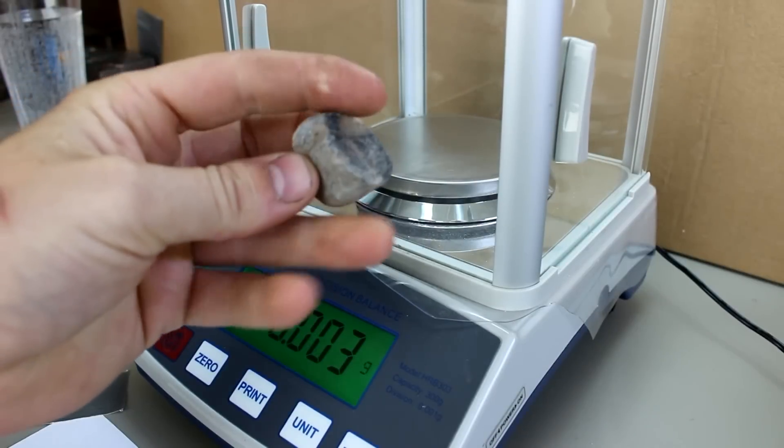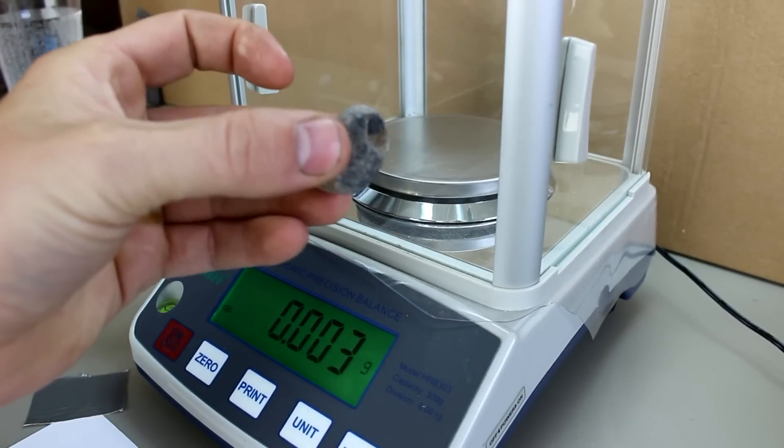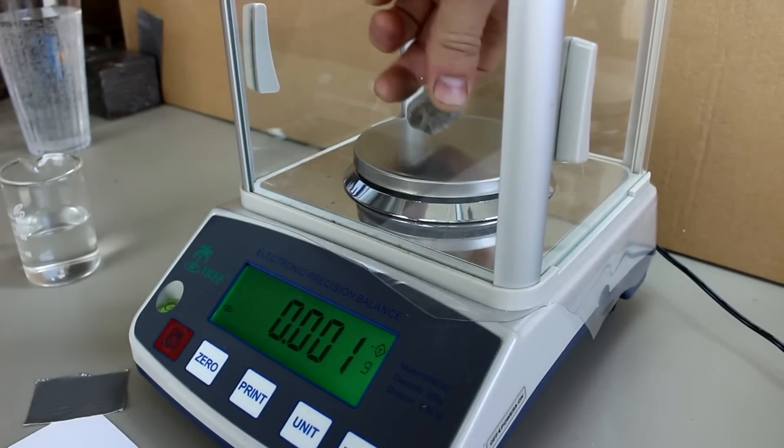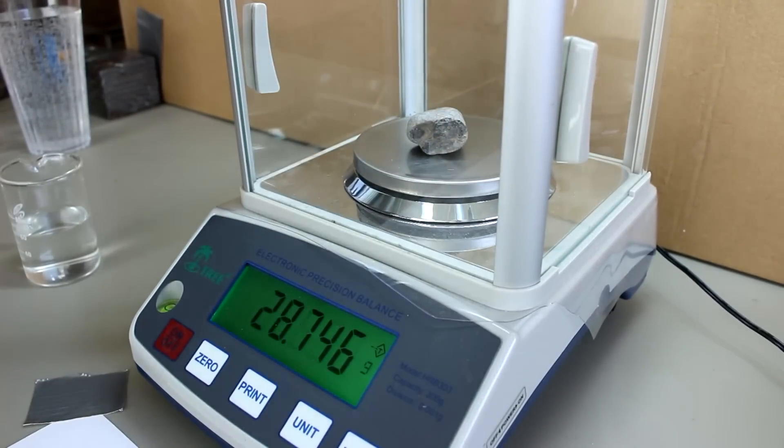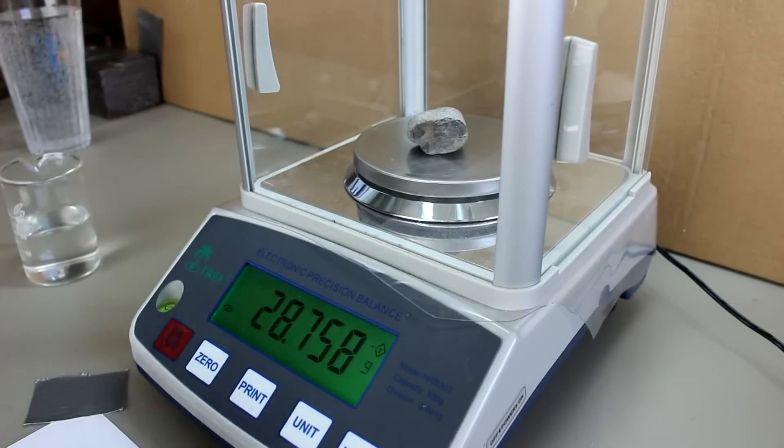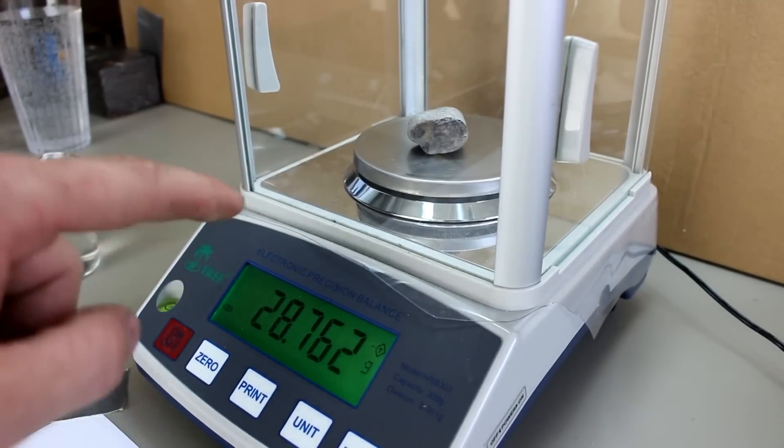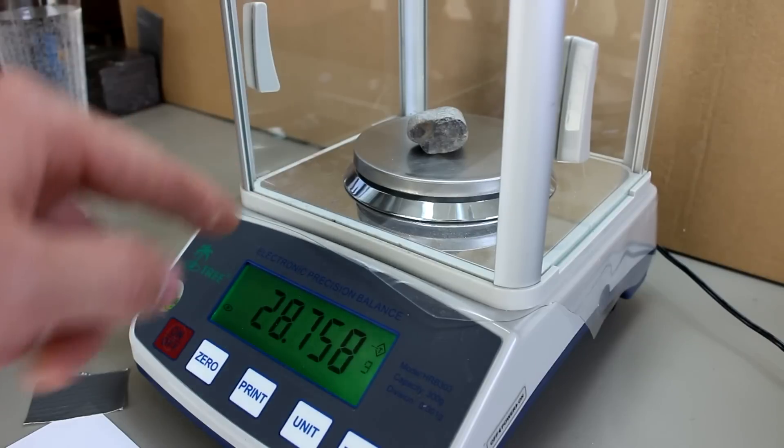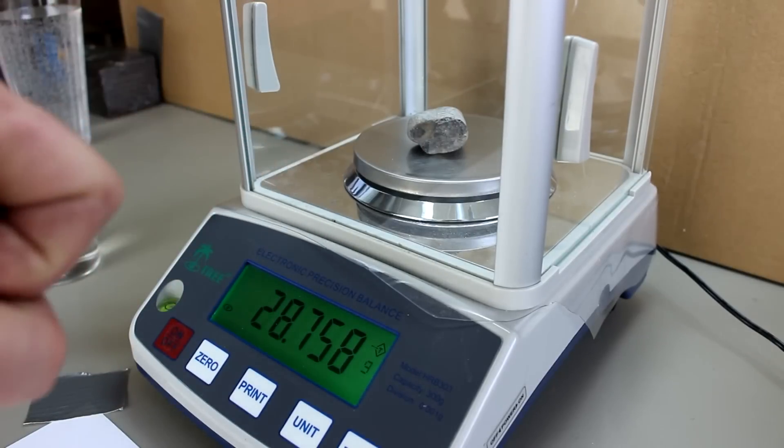But first let's measure the density of this rock by using a method that you probably learned in your 8th grade science class. We're first going to zero the scale, and then I'm going to weigh the rock and write down its weight. Of course the scale is actually converting the weight or force that the rock is applying on it into mass by multiplying it by gravity.